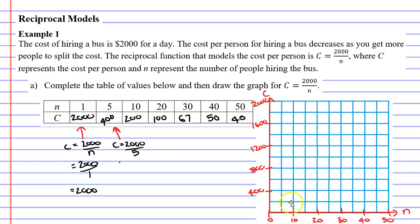Let's label these points. When n is 1, C is 2,000 — very close to 0 on the n-axis and all the way up at 2,000. When n is 5, C is 400. When n is 10, C is 200. When n is 20, C is 100. When n is 30, C is 67. When n is 40, C is 50. And when n is 50, C is 40. You can see we're getting much closer to the n-axis but never touching it and never going past it. Once we draw our curve, we get just one branch from our hyperbolic graph.